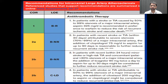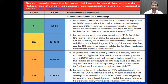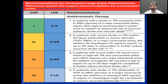In a patient with stroke or TIA caused by 50–99% stenosis of a major intracranial artery, aspirin is recommended in preference to reduce the risk of recurrent ischemic stroke and vascular death — meaning when the stroke is not cardioembolic and you found disease in the cranial arteries, you need aspirin. Similarly, in patients with recent stroke or TIA within 30 days attributed to severe stenosis of 70–99% of a major intracranial artery, addition of clopidogrel 75 mg to aspirin for up to 90 days is reasonable — so you need dual antiplatelet therapy in this situation.